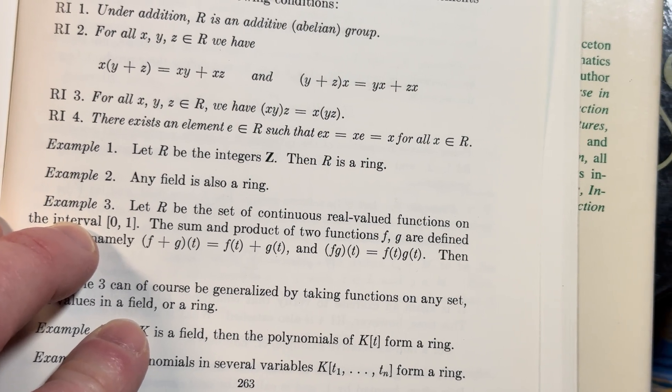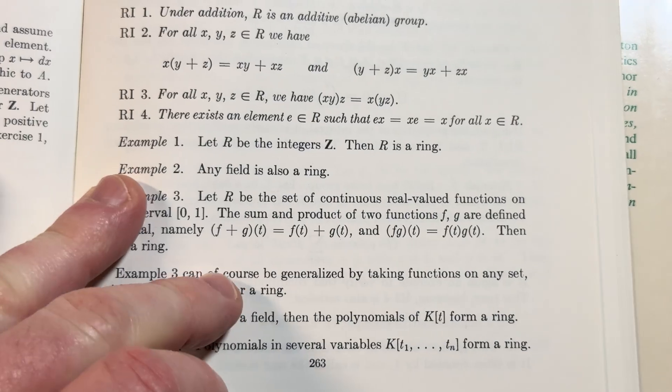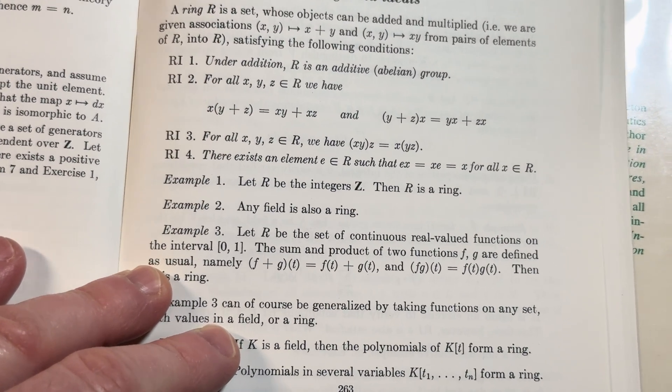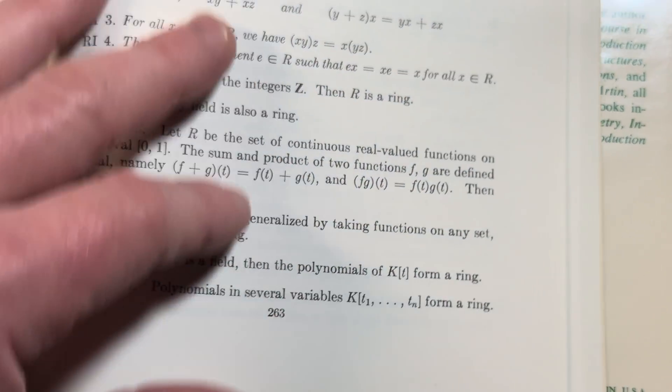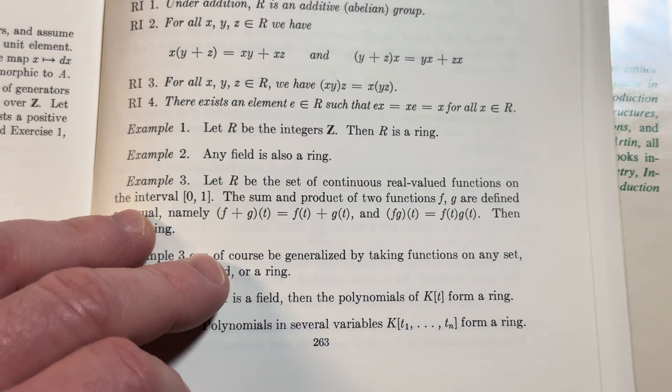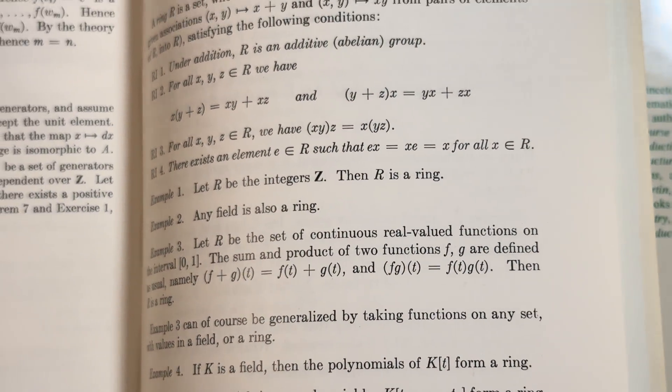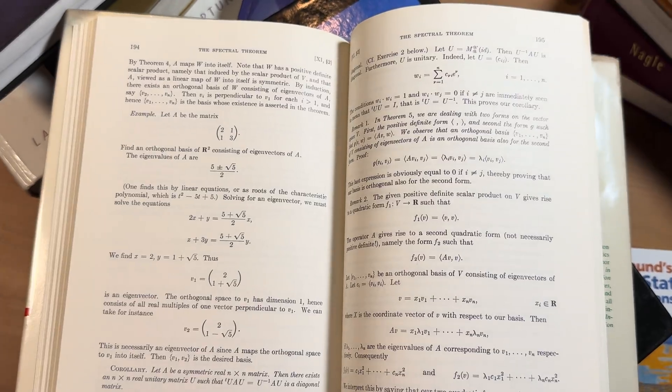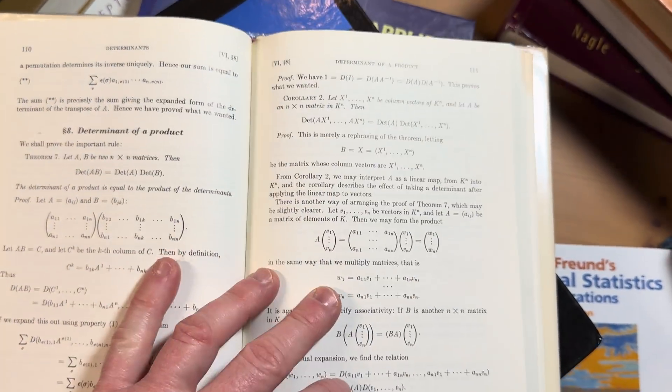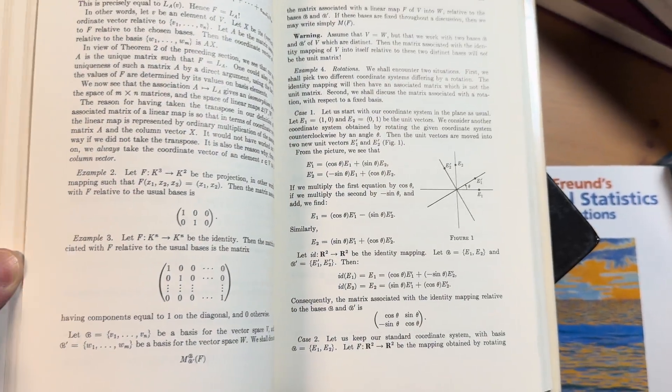R, the integers. Let R be the integers. R is a ring. Any field is also a ring. So I guess he defines field before. So this is very different from what you might expect. And the reason he does that, by the way, is because it's a linear algebra book. So when you define vector spaces, you define them over a field. So it makes sense in that regard.